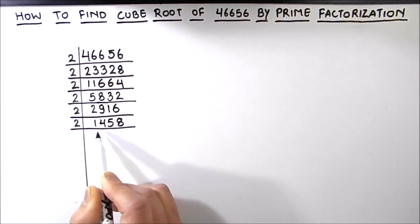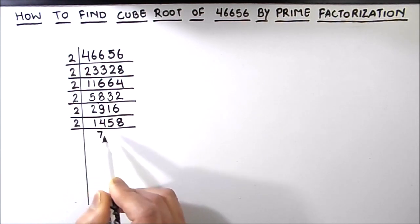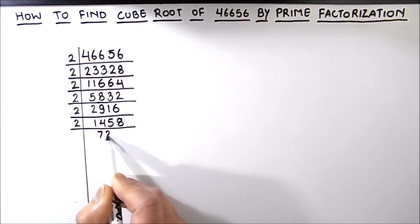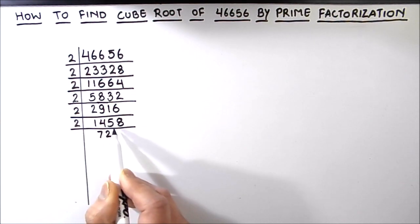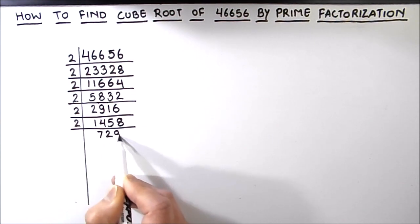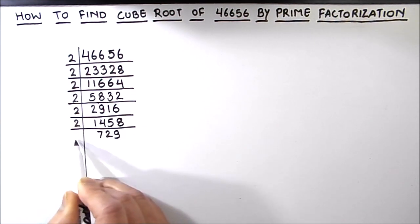Dividing the number again: 2 times 7 is 14, 2 times 2 is 4, 1 is remainder, this becomes 18, 2 times 9 is 18.